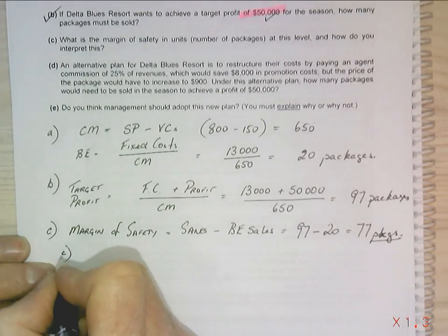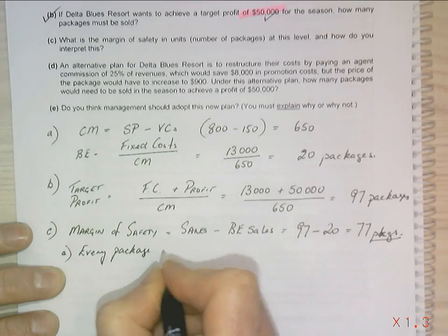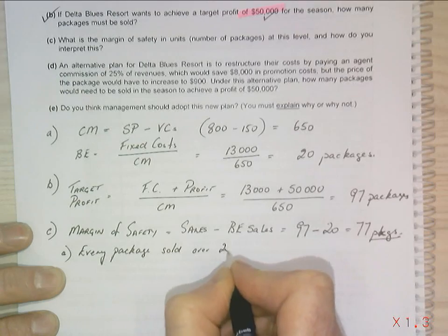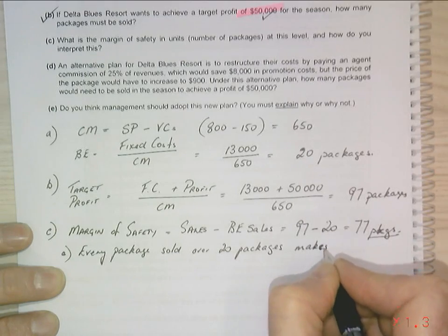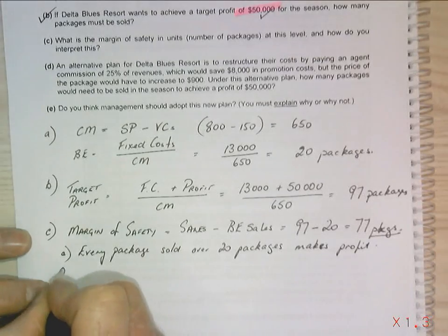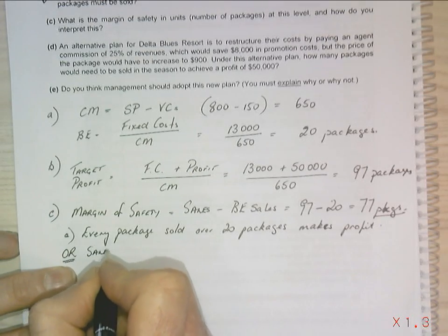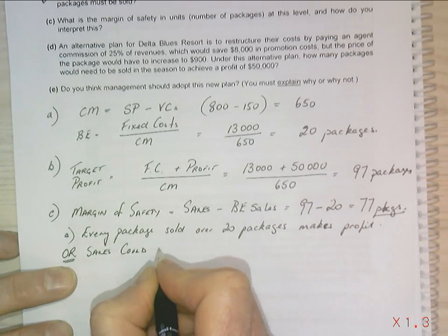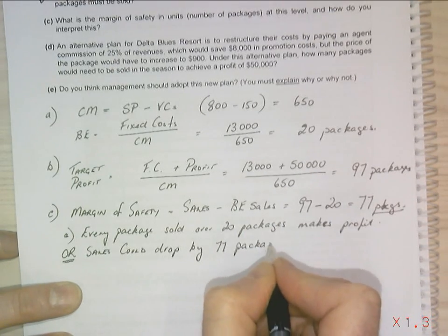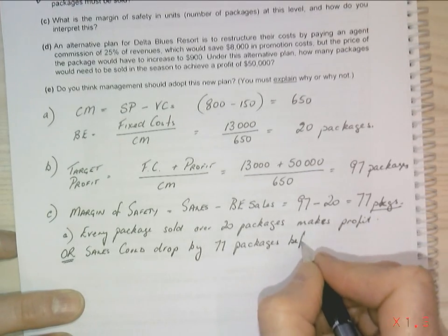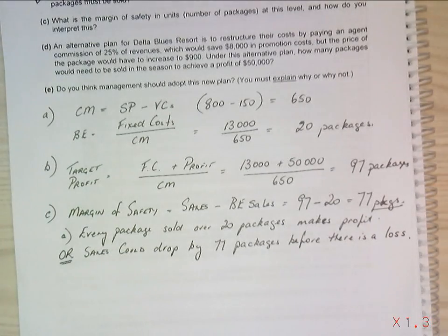Now how do I interpret this? Every package sold over 20 packages makes profit. Or you could say - it's not both of these answers, it's either one or the other - sales could drop by 77 packages before the business incurs a loss. So that's what we're looking at there.